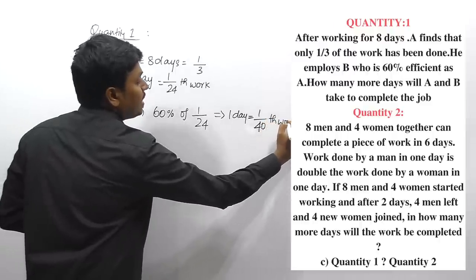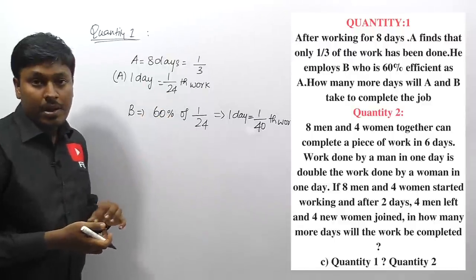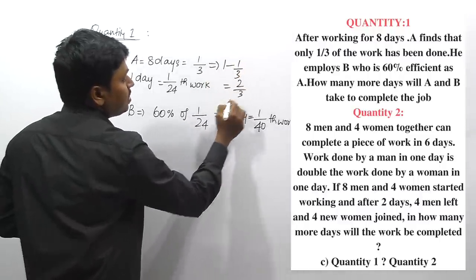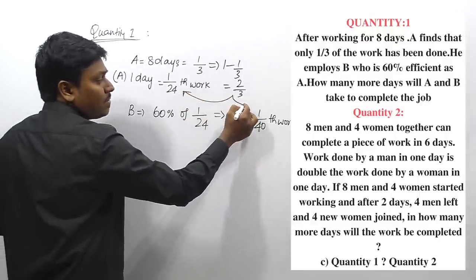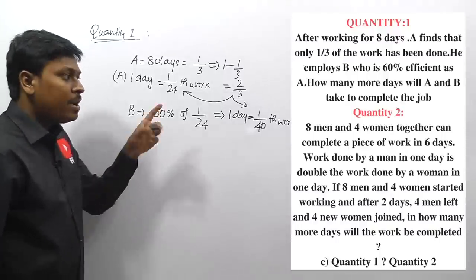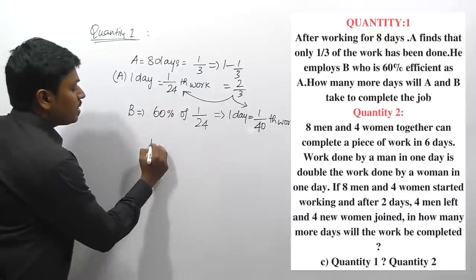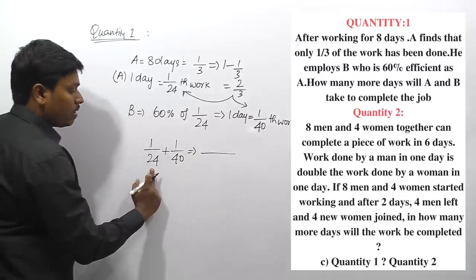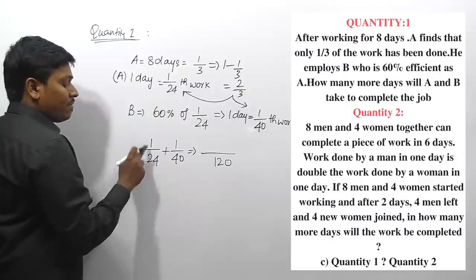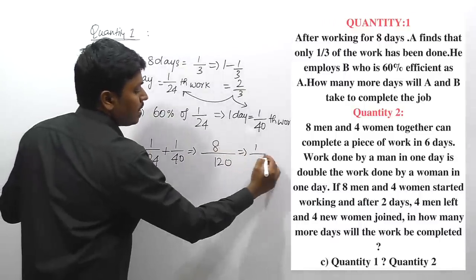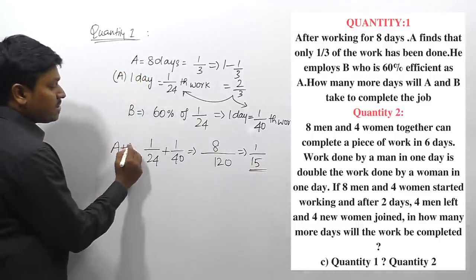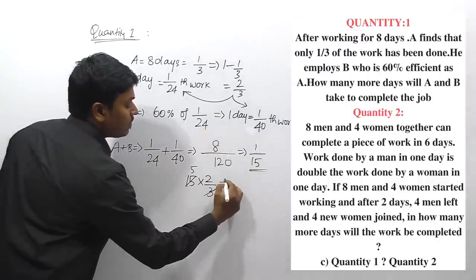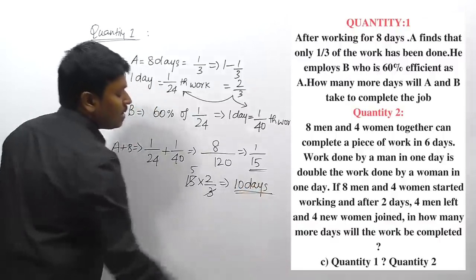A and B working together: combined one-day work = 1/24 + 1/40 = 5/120 + 3/120 = 8/120 = 1/15. Time to complete 2/3 remaining work = (2/3) × 15 = 10 days. Quantity one answer: 10 days.